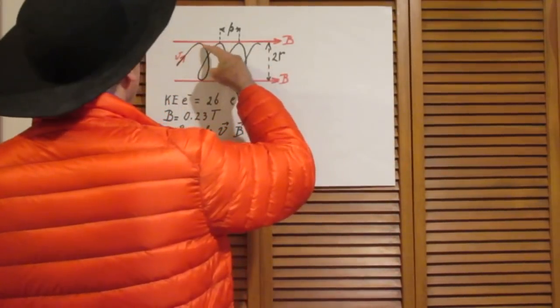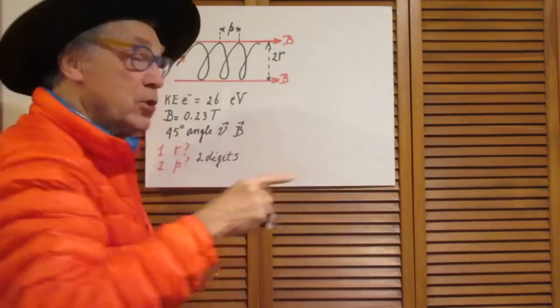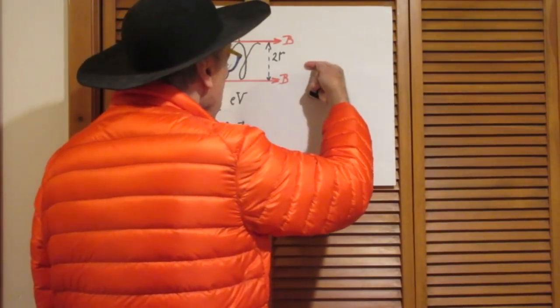If you look at the motion of that electron which is going to spiral, if you look at it from this direction, then you will see it going around in a circle.